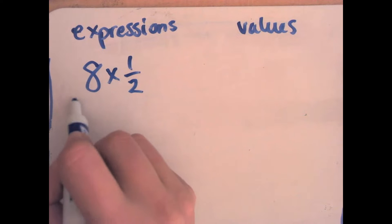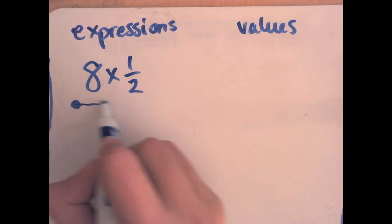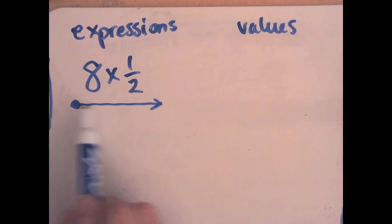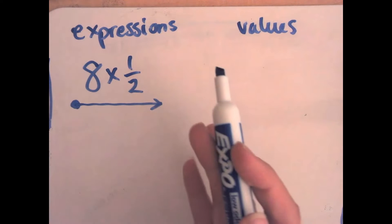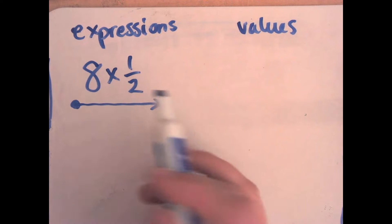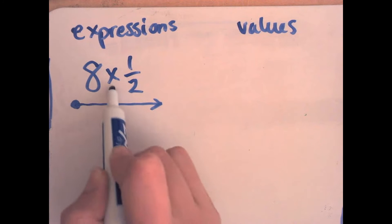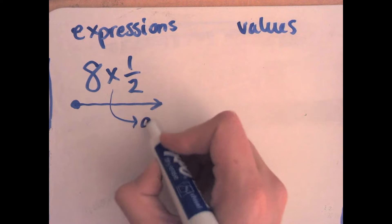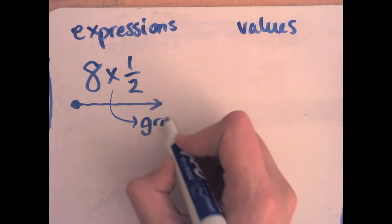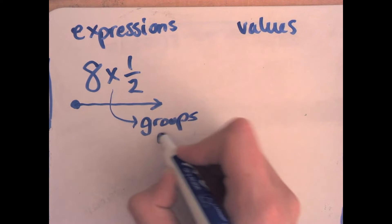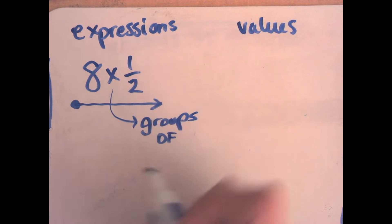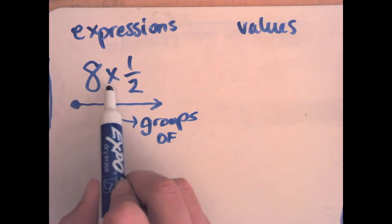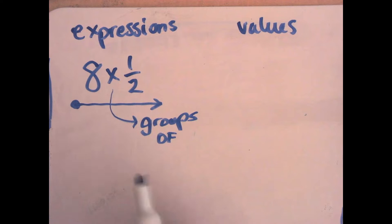So this is what an expression would look like. We read an expression — it's a number sentence, just like a word sentence. We read it from left to right, just like you normally would. And we would say: eight...